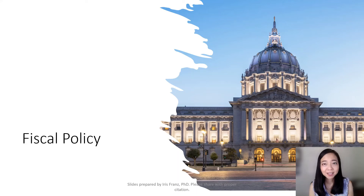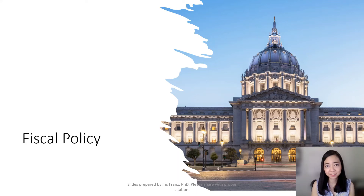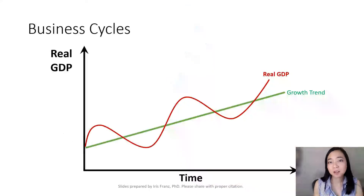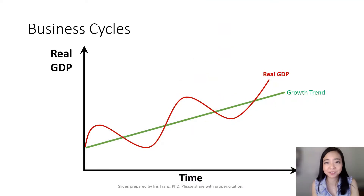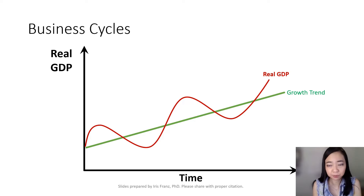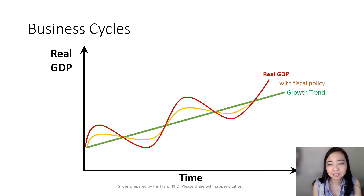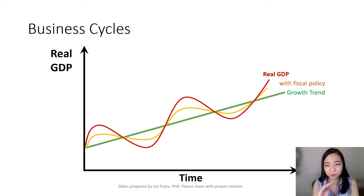Hello everyone, Professor Franz here, and today we're going to talk about fiscal policy. The purpose of fiscal policy is to help us have a smoother ride at the business cycles. The red line shows you real GDP without fiscal policy, but the yellow line shows you with fiscal policy our ride will become smoother.